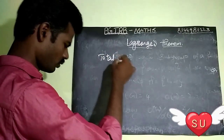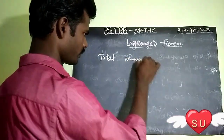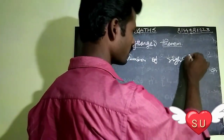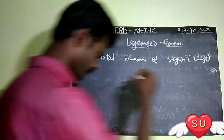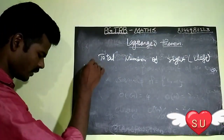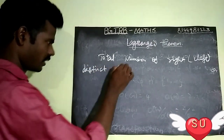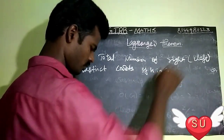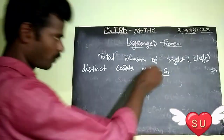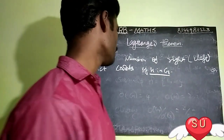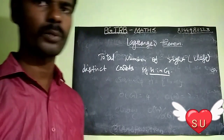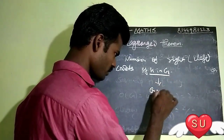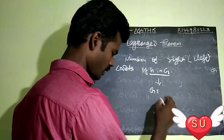Key points: the total number of right or left distinct cosets of H in G. The total number of distinct cosets of H in G — how to write this?